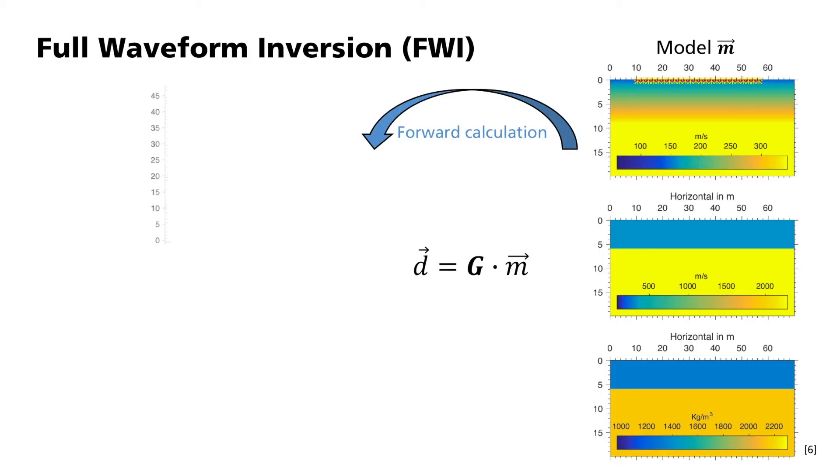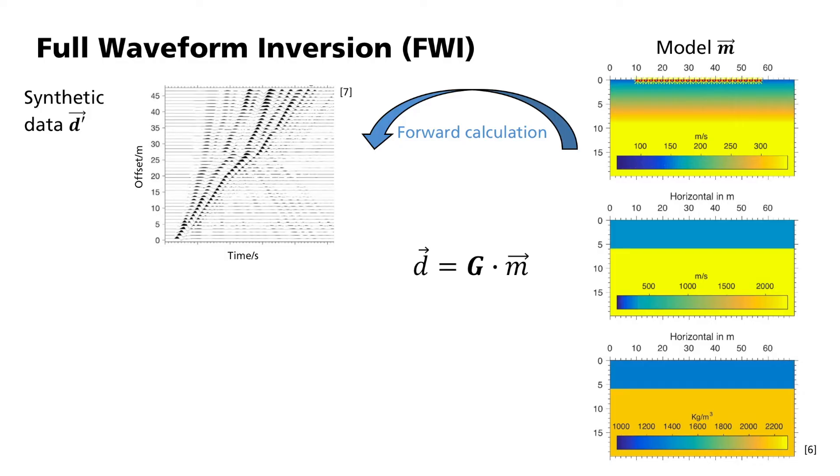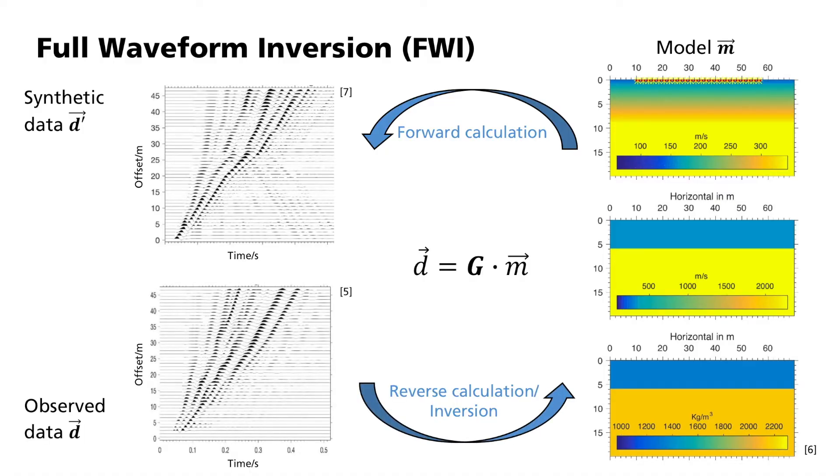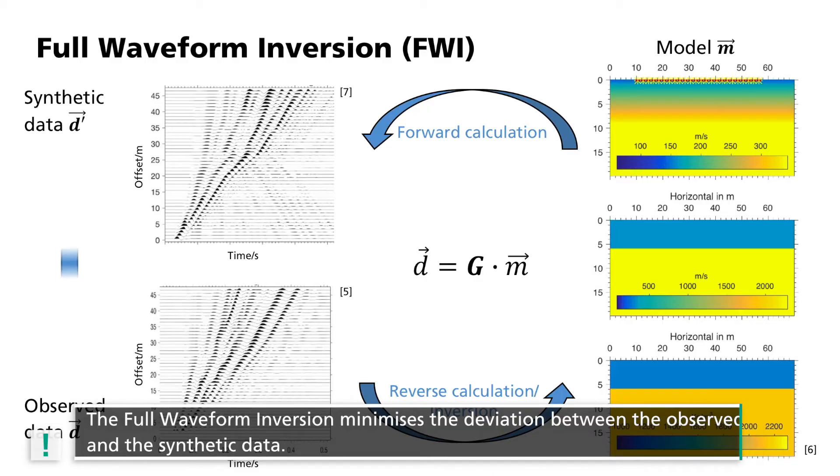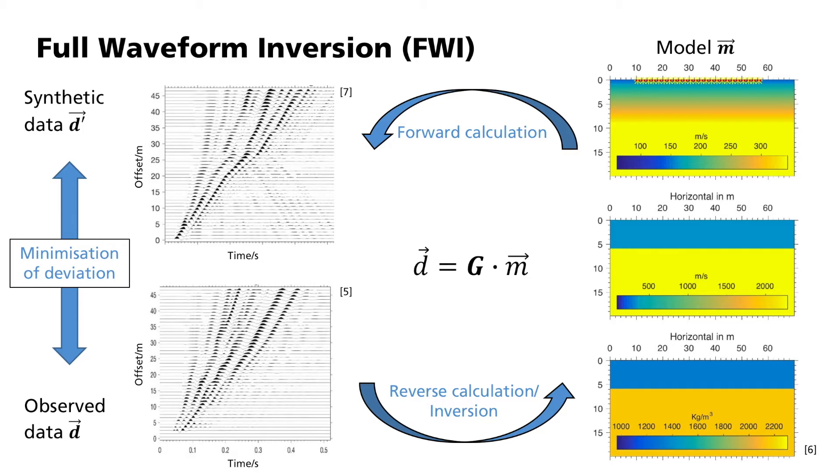The transformation matrix G is used to link the model vector of the subsurface properties M with the measured data D. D equals G times M. This is called forward calculation. Here, with the help of the finite difference method, the entire wave field is calculated in a specified subsurface model. G is specified by the equation of motion using additional boundary conditions. The reverse calculation, which is the path that we want to use, namely from the measured data to a subsurface model, is not trivial. This process is called inversion. Full waveform inversion uses a procedure which minimizes the deviation between the observed measurement data and the data synthetically calculated by the subsurface modeling. In practice, synthetic data is forward calculated from the starting model and compared with the observed data. The inversion algorithm then adjusts the model and the synthetic data is then recalculated. This iterative process is repeated until the deviation between the observed and synthetic data falls under a previously defined criterion.